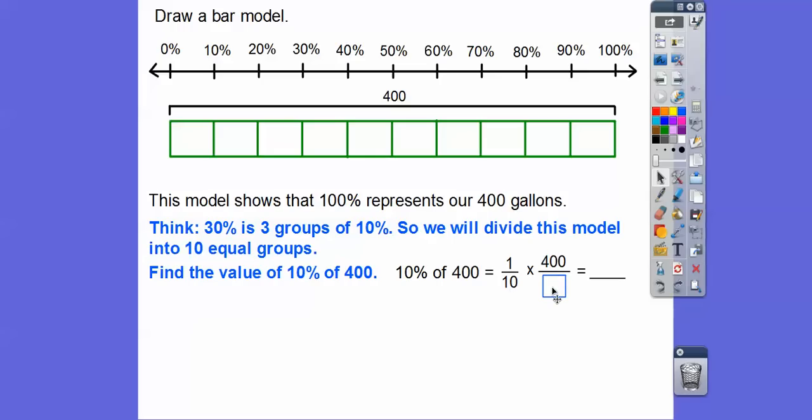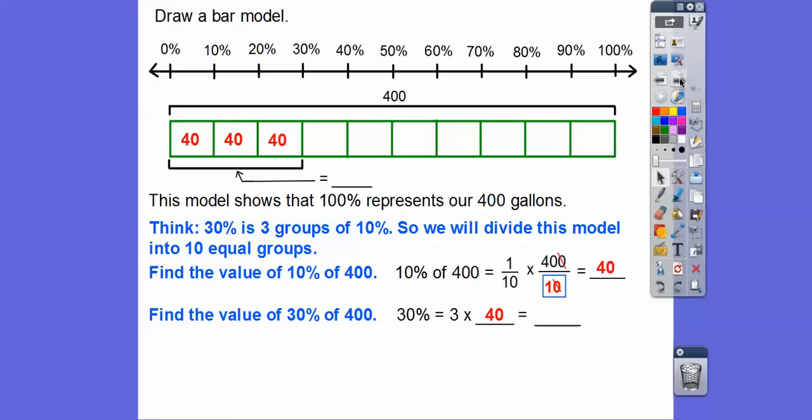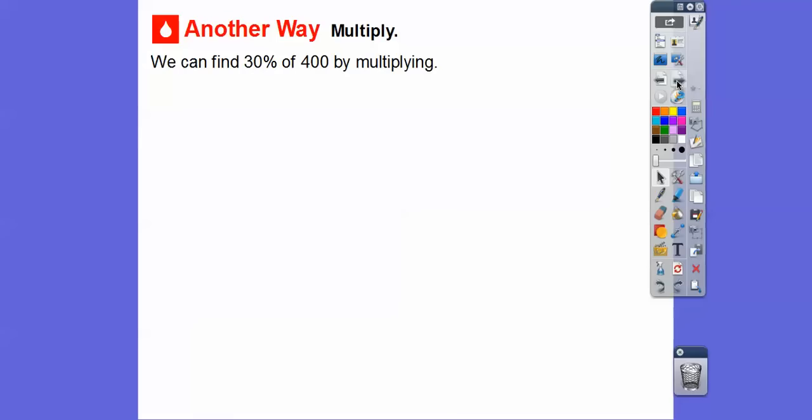10% of 400 is 1/10. Remember, 10% is 1/10. So 1/10 times 400 - we're going to multiply 1 times 400 over 10. So we have 400 divided by 10. We can just cancel off these zeros. When they end in zeros, you can cancel one if there's one on the bottom. So 40 over 1 is 40. 10% of 400 is 40. So let's find the value of 30% of 400. 30% is three times the 40. So 40 plus 40 is 80, 80 plus 40 gives us 120. So 120 is our 30%.